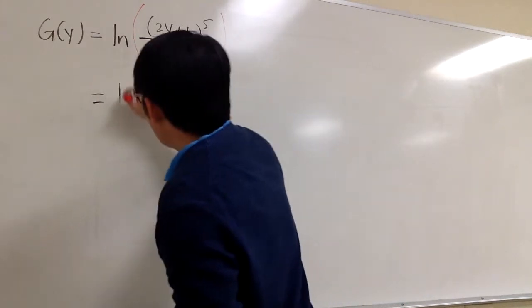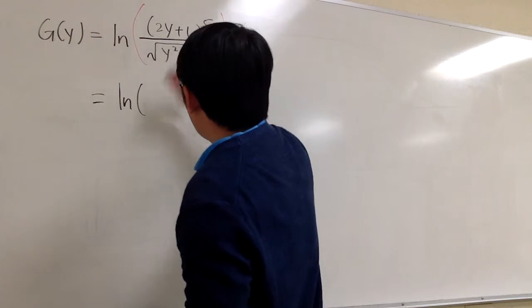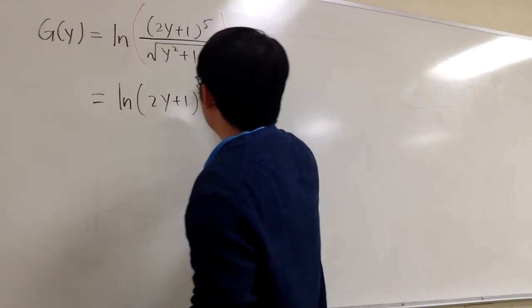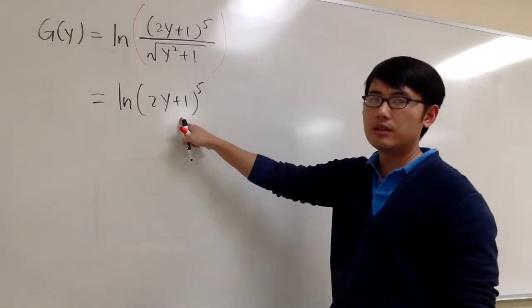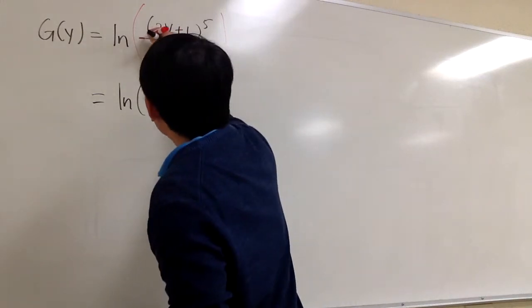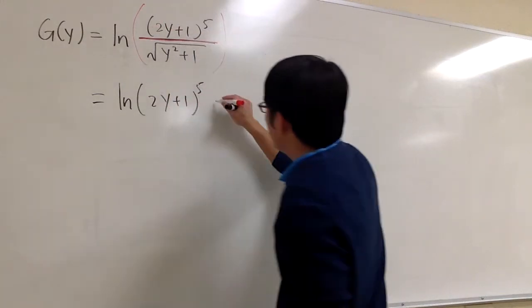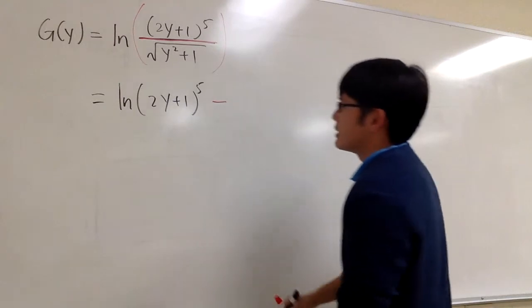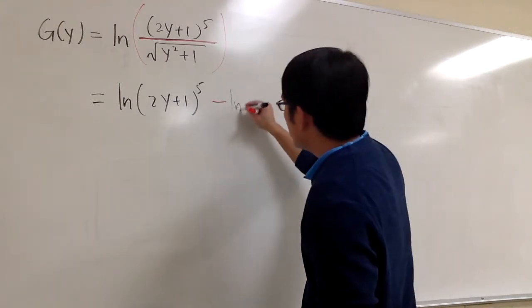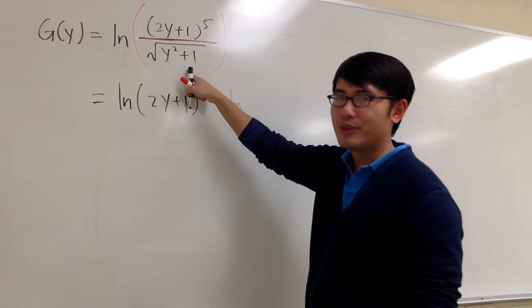I'm going to write this down. ln of 2y plus 1 raised to the fifth power, that's the numerator. And because we have a fraction, we can subtract the natural log of the denominator.